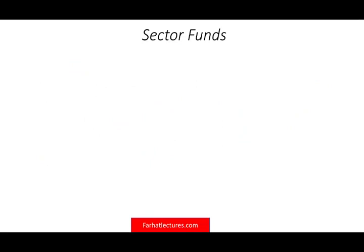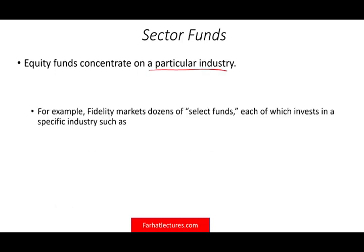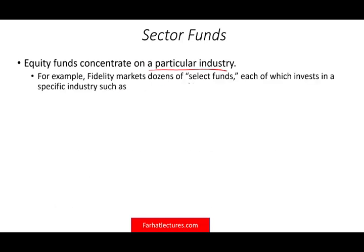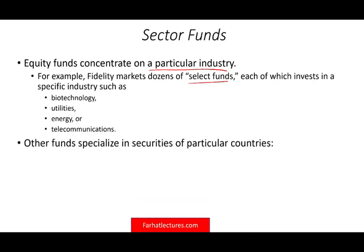You can also have sector funds, which means you are concentrated in one industry. You are buying stocks but concentrated in a particular industry. For example, Fidelity markets dozens of select funds, each investing in a specific industry — you can buy a fund that tracks biotech, utilities, energy, software, or telecommunications. Other funds can specialize geographically in particular countries or areas — like all of the EU market, a specific country like Mexico, or a region like Southeast Asia. There are even funds that track growth in Africa.